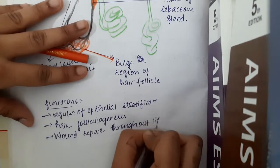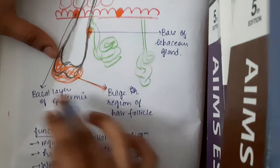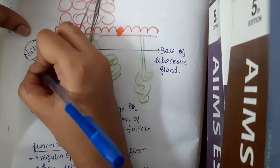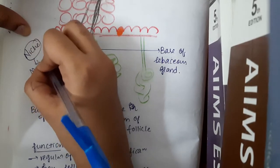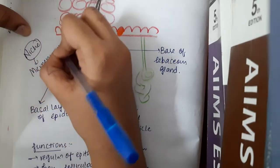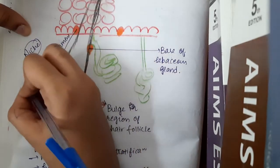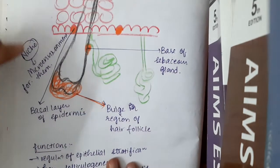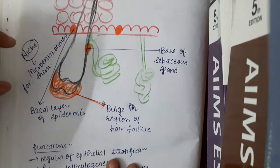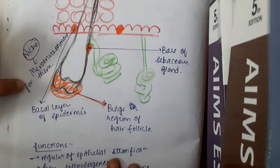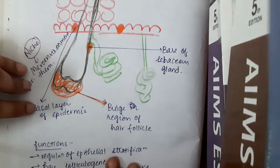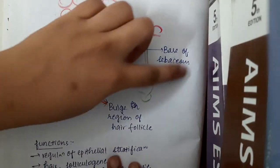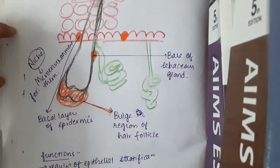The places where epidermal stem cells are present are called the microenvironment, or niche, for these epidermal stem cells. There are mainly three niches: the basal layer of the epidermis, the basal region of the hair follicle, and the base of the sebaceous gland.